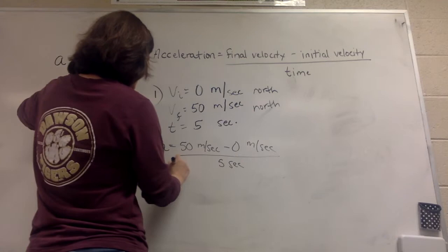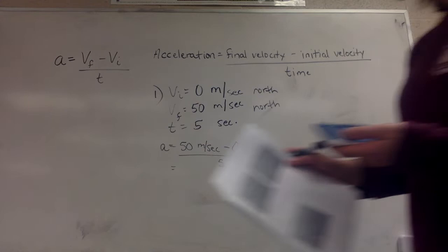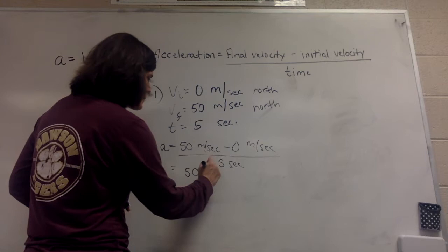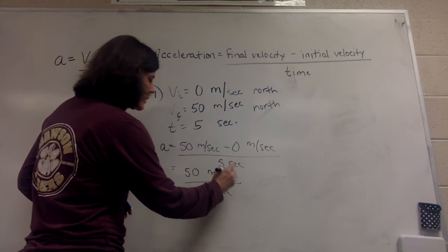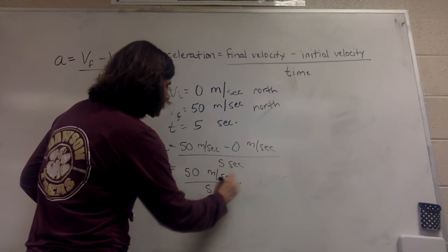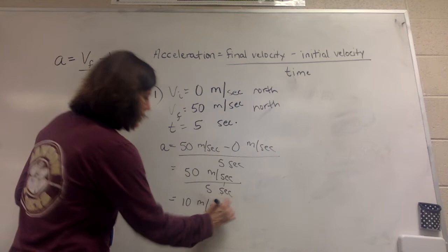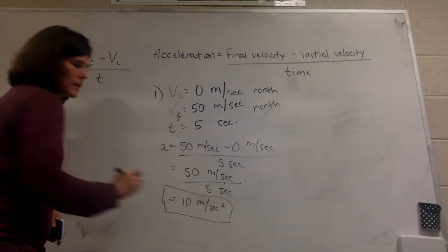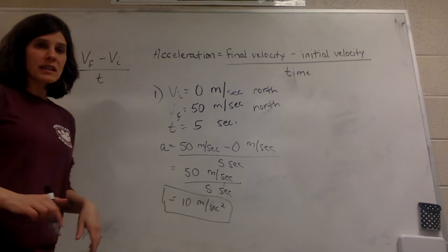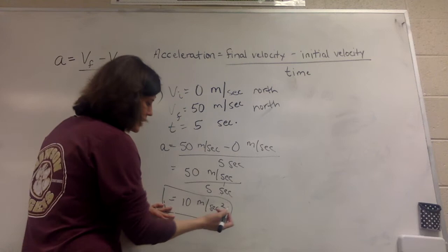When you calculate this — punch it into your calculator — 50 minus zero gives you 50 meters per second, divided by five seconds, and you're going to end up with 50 divided by five, so 10 meters per second squared. That would be the acceleration of the race car. Remember, sometimes you don't always see this included, but technically acceleration does have a direction, so 10 meters per second squared toward the north — that would be the acceleration of the race car.